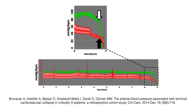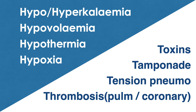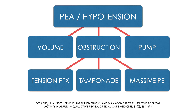The causes of cardiac arrest are often categorized as the H's and T's. That's a helpful way of thinking about it, but not a rapid way of solving the problem in real time. I prefer the 3-plus-3 rule. These are causes of cardiac arrest, but as I've shown, hypotension, when bad enough, becomes cardiac arrest — so we can say these are causes of hypotension too.